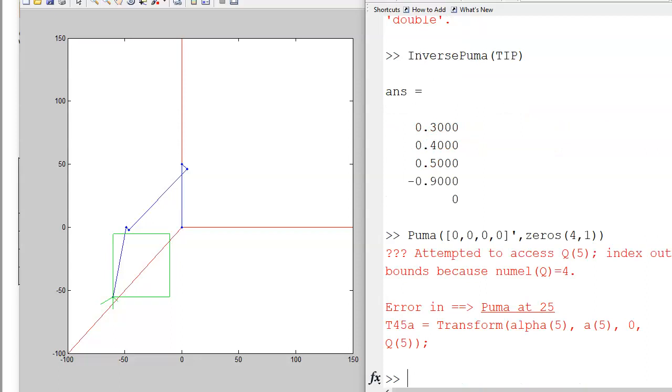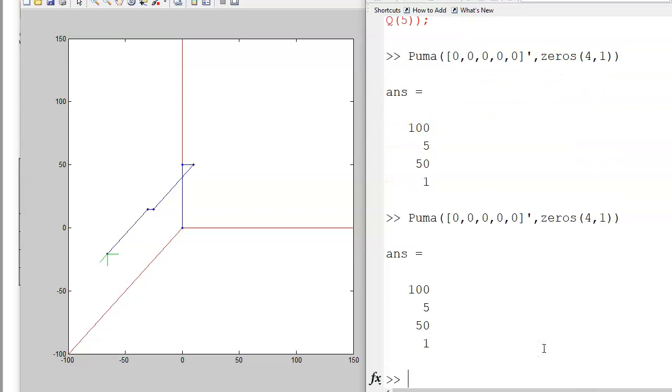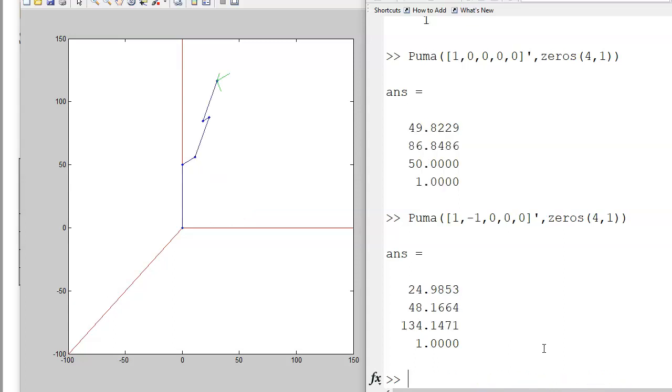Once I have that defined, I can now do forward kinematics just by typing the angles. So this is your position for a Puma robot. And there's actually five joints, so there's the tip position at zero position. If I rotate the base, say one radian, rotate the shoulder by minus one radian, rotate the elbow by three radians, make that two radians. And that's the forward kinematics.